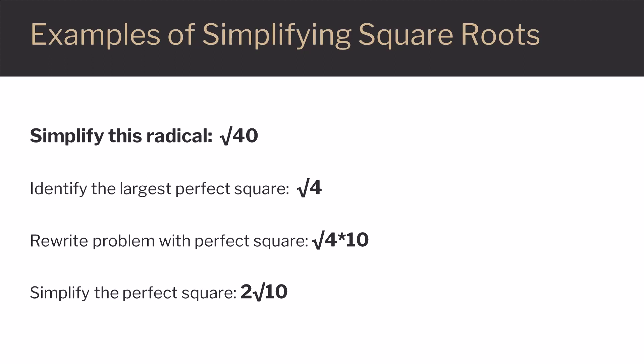We'll look at 40 and ask if 40 has a factor that is a perfect square. In this case, the largest perfect square within 40 would be 4. Since 40 equals 4 times 10, we rewrite the problem with the perfect square and the leftover number. We now have the square root of 4 times 10.